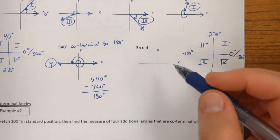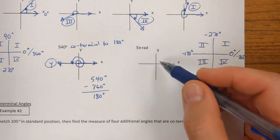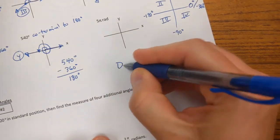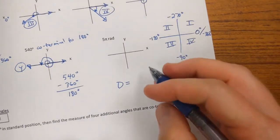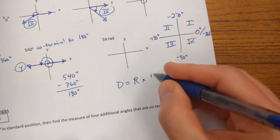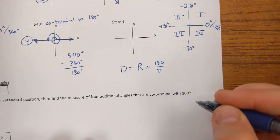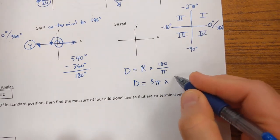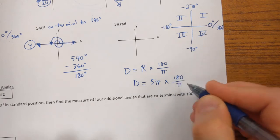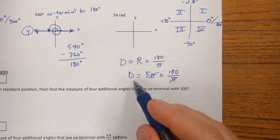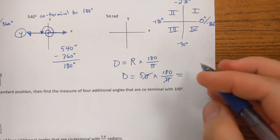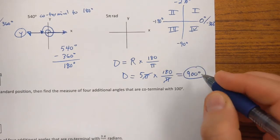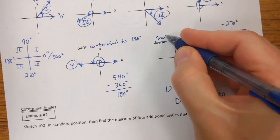Now let's look at the last one: 5π radians. Some people know radians well enough to just draw this, but for most of us we're going to want to convert to degrees first. Remember, degrees equals radians times 180 over π. The π cancels out, so in degrees this is just 5 times 180, which is 900. So if it's easier for you, think of this as 900 degrees.